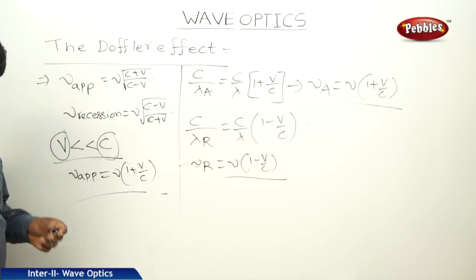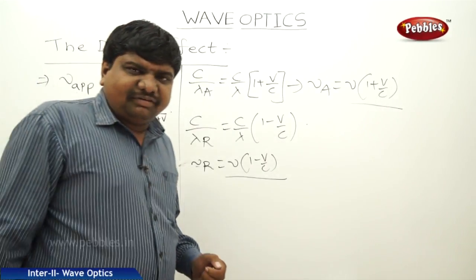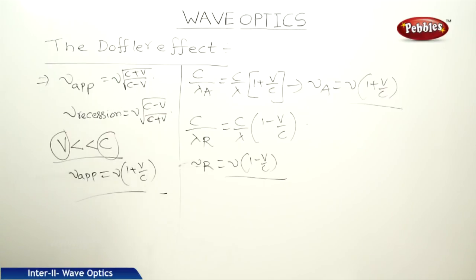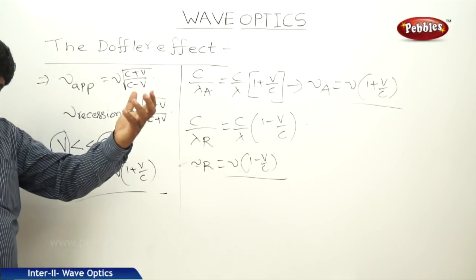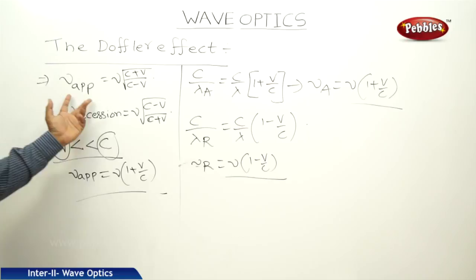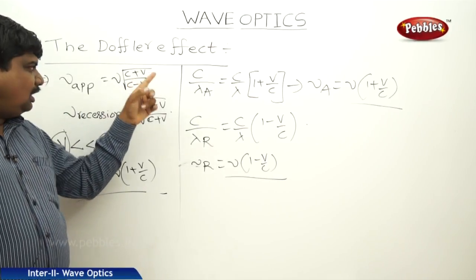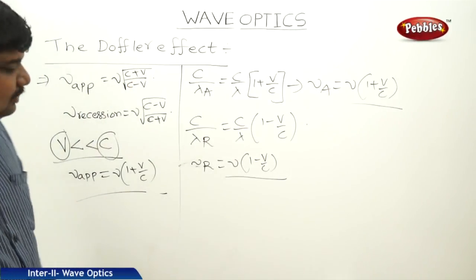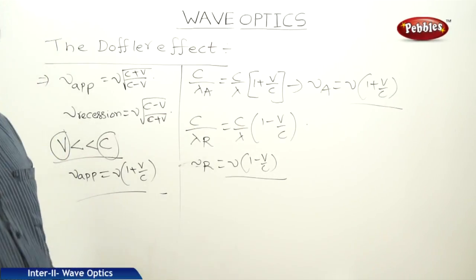For Doppler effect in light waves, when a light wave approaches the observer, we have the frequency formula: frequency into under root (c plus v) by (c minus v), where c is speed of light and v is speed of observer. For recession, nu recession equals nu into (c minus v) by (c plus v).